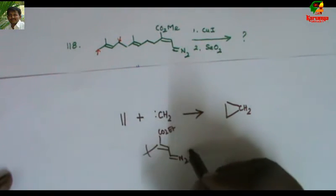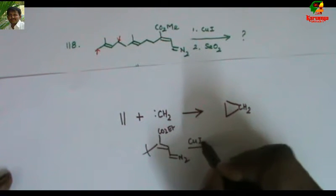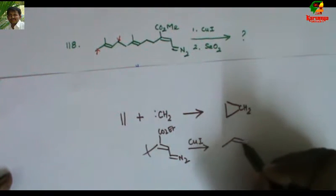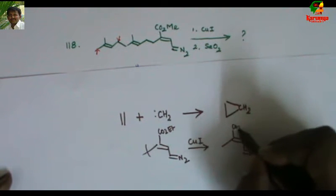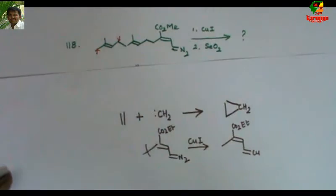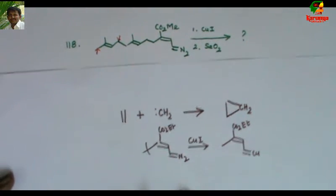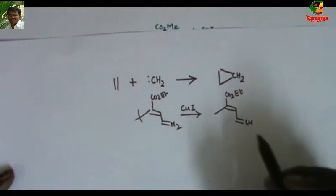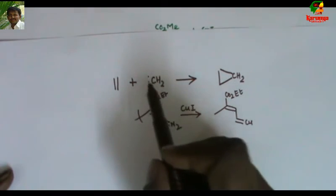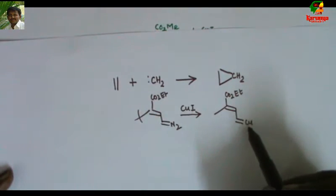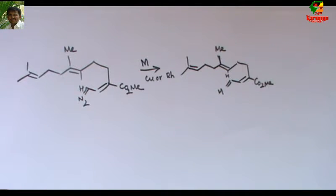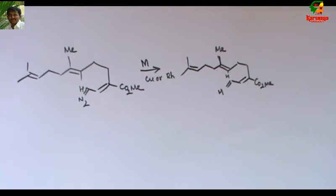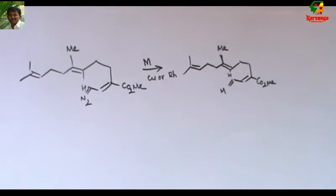This diazo compound reacts with copper iodide to give metal carbenoid. This metal carbenoid can react similar to carbene, even though we don't write it like this. It can undergo cyclopropanation. Now let us go to the first step, treatment of this diazo compound with copper iodide.